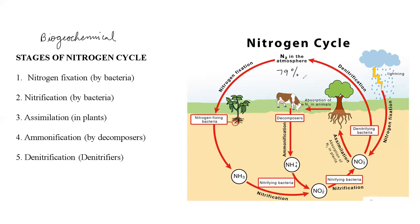Here comes the role of several bacteria and microbes that help in the fixation and assimilation of nitrogen inside the plant body. There are five stages of the nitrogen cycle. The first stage involves nitrogen fixation, carried out by bacteria. The second stage is nitrification, also carried out by bacteria. The third stage is assimilation, which happens in the plant. The fourth stage is ammonification, carried out by decomposers. And the fifth stage is denitrification, carried out by denitrifiers.